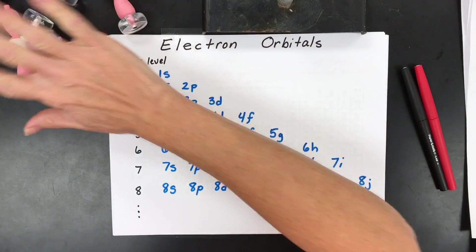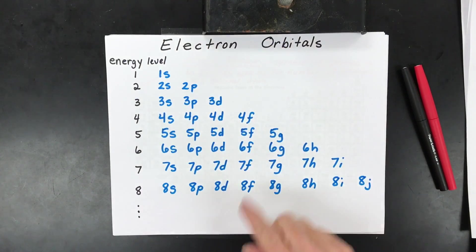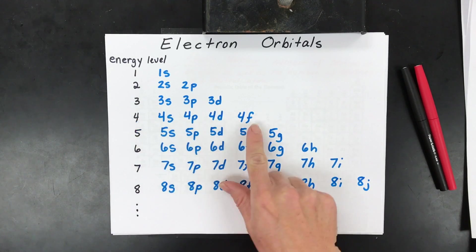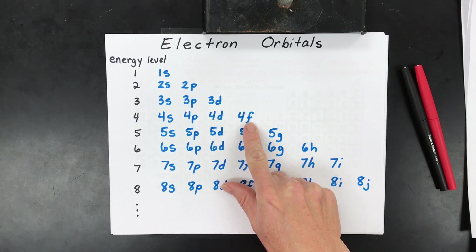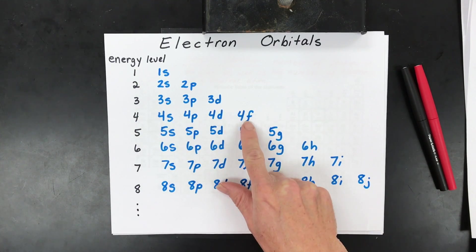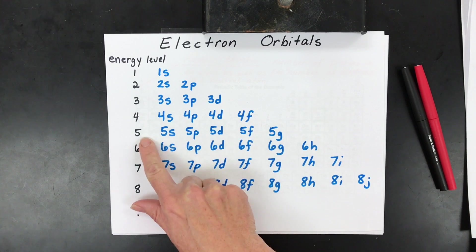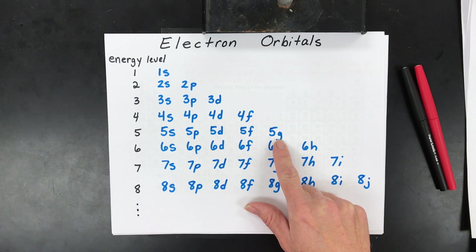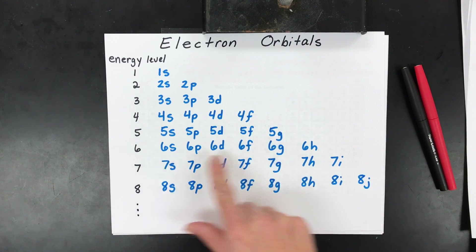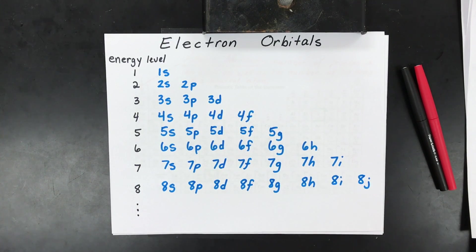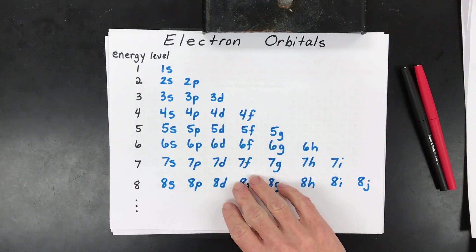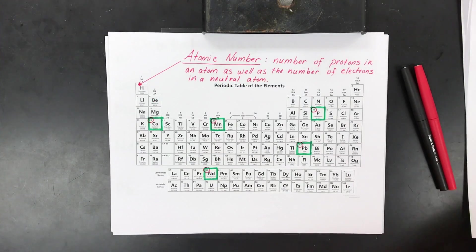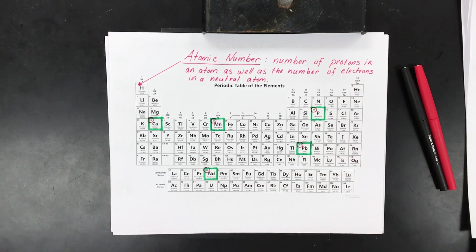This list shows all the orbitals available at different energy levels. When you get to the fourth level you can have a fourth type of orbital — the f. At the fifth level you can have a g shape, but currently we don't have any elements with that type of orbital. There is a complete pattern with the type and quantity of orbitals at each energy level.